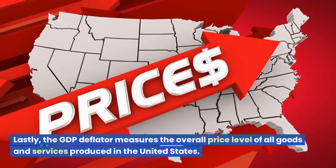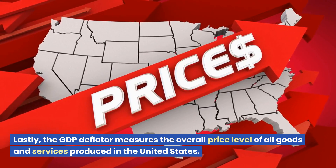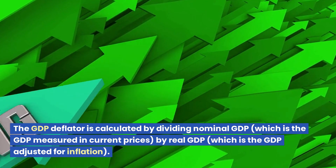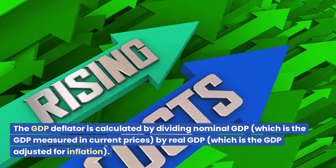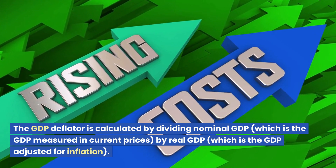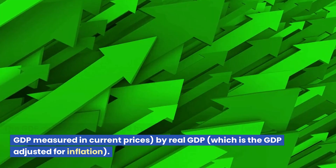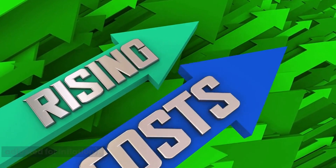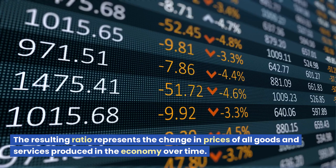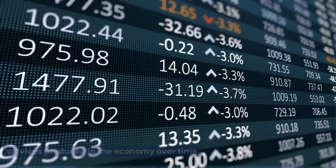The GDP deflator measures the overall price level of all goods and services produced in the United States. It is calculated by dividing nominal GDP — the GDP measured in current prices — by real GDP, which is the GDP adjusted for inflation. The resulting ratio represents the change in prices of all goods and services produced in the economy over time.